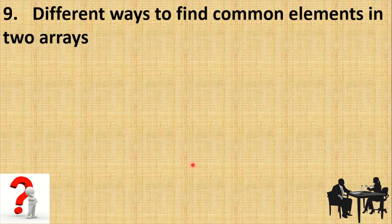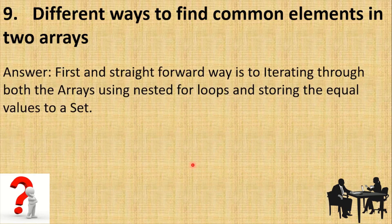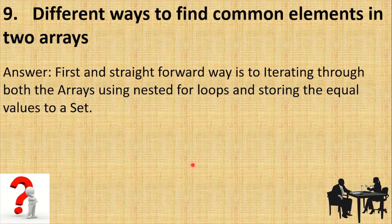The next question: you have two different arrays and want to find the common elements present in both. The first straightforward approach is to use nested for loops — iterate through one array with an outer for loop, and inside that iterate through the other array and compare each element. Repeat for all elements of both arrays, and store matching values into a Set to get distinct common values.